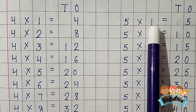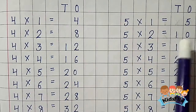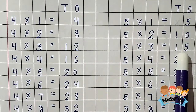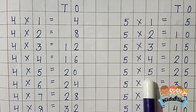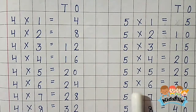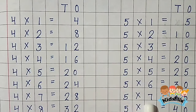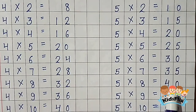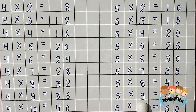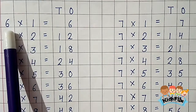5 5s are 25. 5 6s are 30. 5 7s are 35. 5 8s are 40. 5 9s are 45. 5 10s are 50. Now the table of 6.